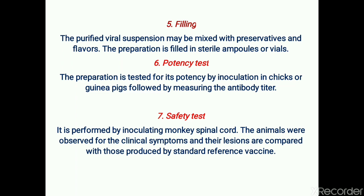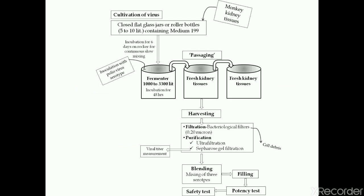The seventh step is the safety test. It is performed by inoculating monkey spinal cord. The animals are then observed for clinical symptoms, and their lesions are compared with those produced by a standard reference vaccine. Since this is a live vaccine that follows the natural route of infection, after vaccinating, the animal may suffer from mild illness.